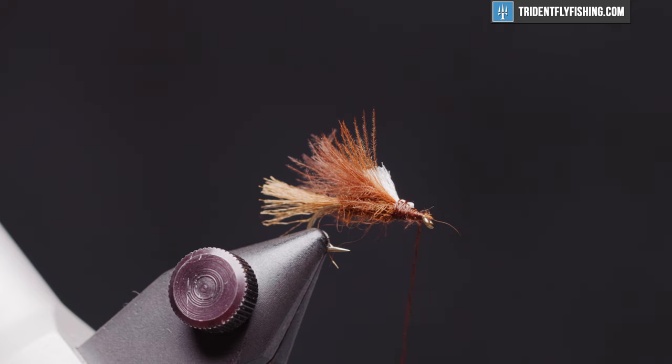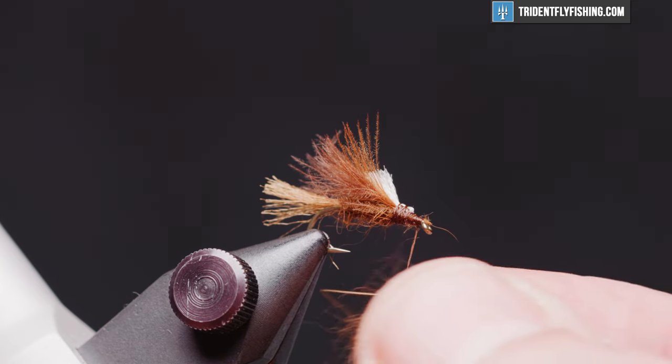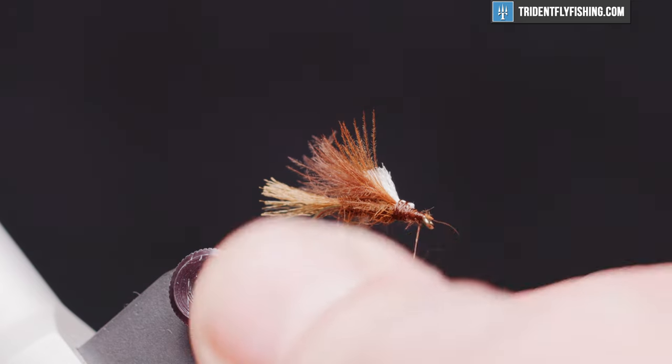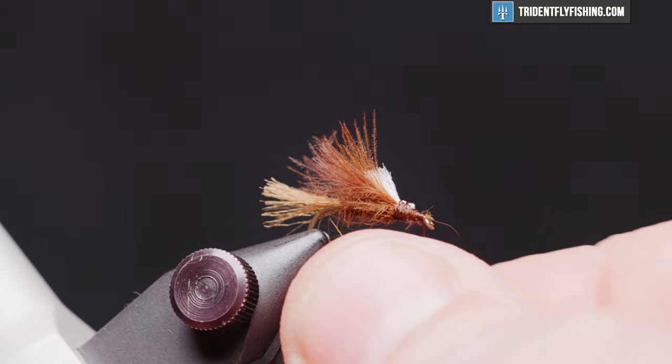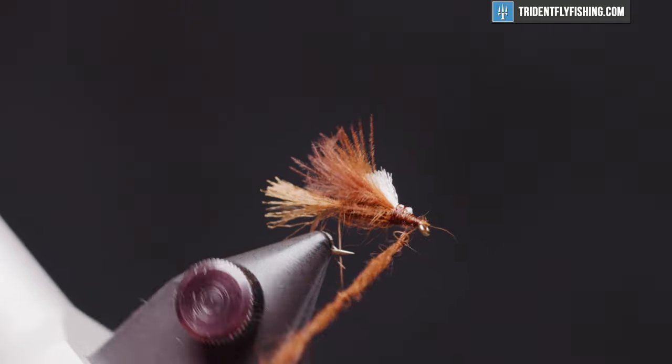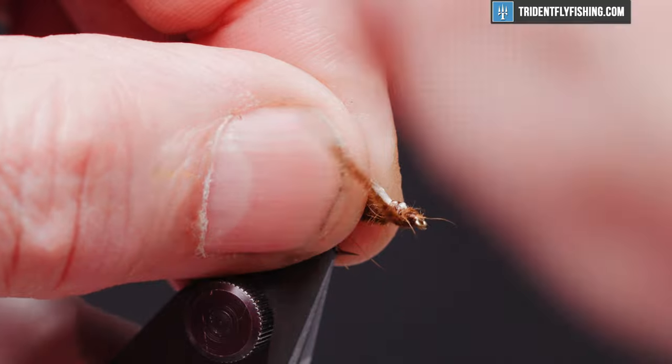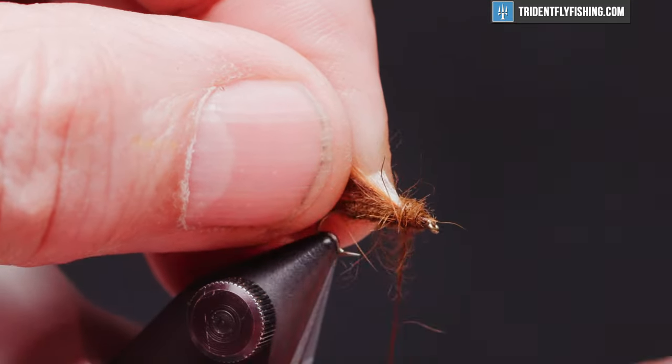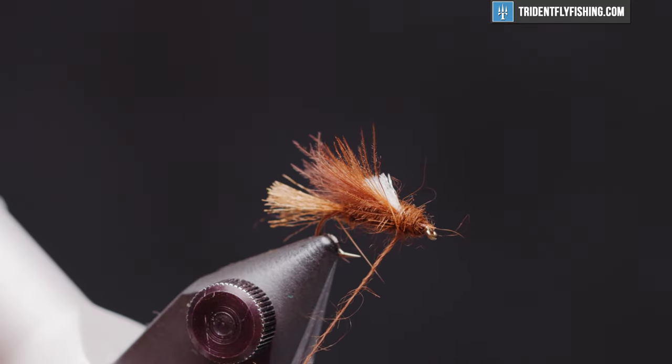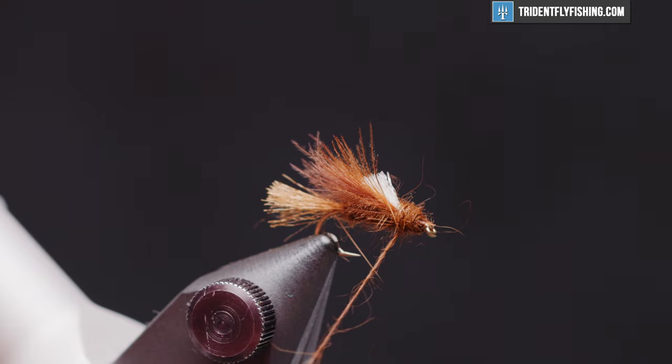We're going to use a bit more dubbing here to form the thorax. This little extra bit of dubbing also is going to help hold our collar in place. And we want to form a dubbing loop for our collar.